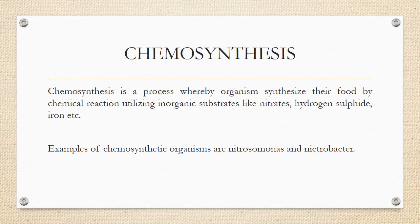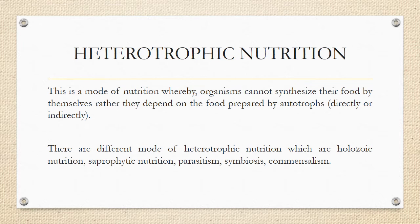Examples of chemosynthetic organisms are nitrifying bacteria and Nitrobacter. In heterotrophic nutrition, organisms are not able to manufacture their own food by themselves, so they depend on autotrophs directly or indirectly. The different modes of heterotrophic nutrition are: holozoic nutrition, saprophytic nutrition, parasitism, symbiosis, and commensalism.